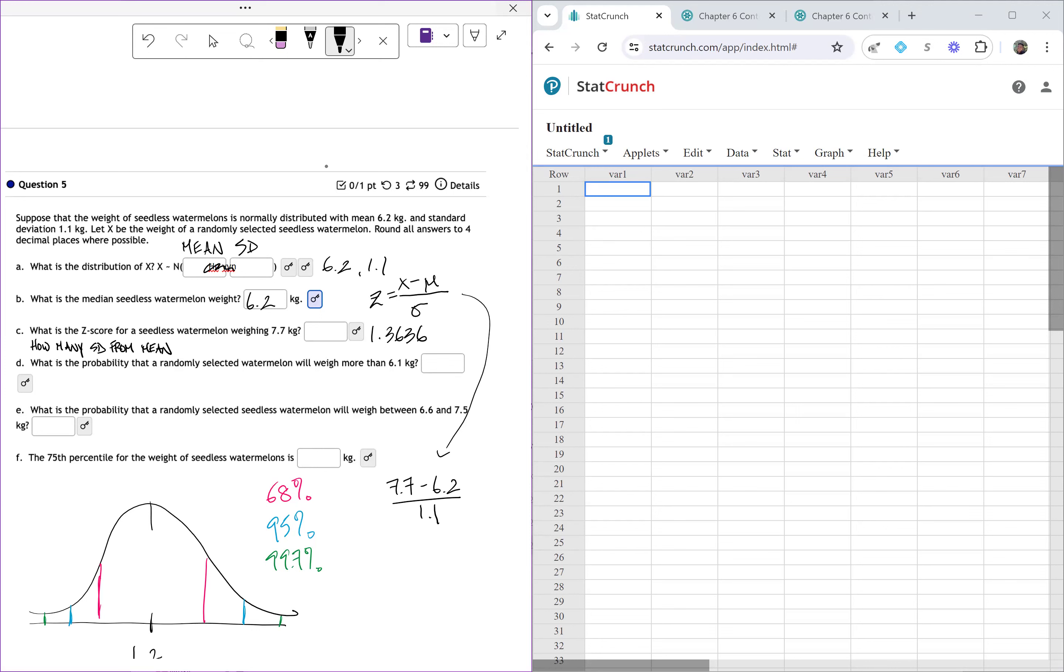Part D, what is the probability that a randomly selected watermelon will weigh more than 6.1 kilograms? And so if we kind of look at these last three, what is the probability, what is the probability, what's the percentile, this is when we should go to our StatCrunch and kind of type in some values. So I'm going to go to StatCrunch, I'm going to go to stat, I'm going to go to calculator.